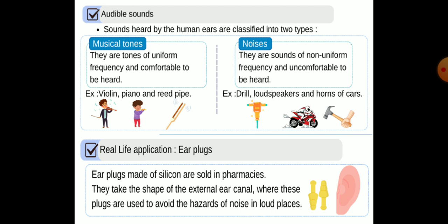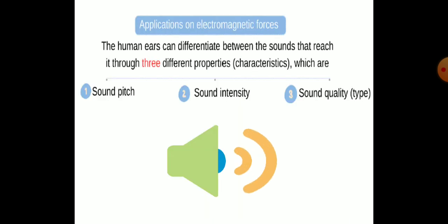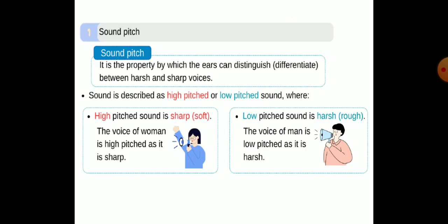Now we are going to talk about the properties of sound waves. We have three different properties: number one, sound pitch; number two, sound intensity; number three, sound quality.